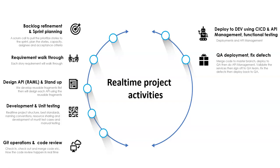Then the developer deploys the code to the QA environment and does API management. Once the services are validated and each service is working as expected, the developer signs off to the QA team so that the QA team will do testing. If they find any defects as part of functional testing, they will raise defects in the scrum board and assign them to the corresponding developer, who should take care of fixing these defects.